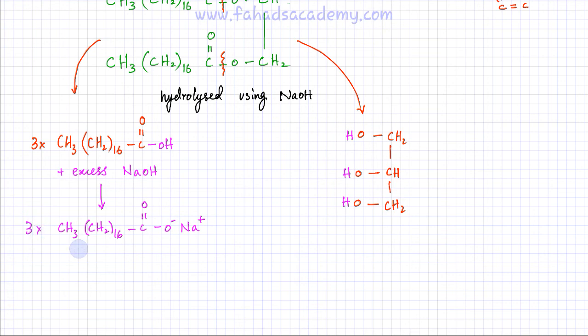And there would be three of these molecules. So this salt formed, these are basically called soaps. So whenever you hydrolyze a fat molecule, you get a carboxylic acid part and you get an alcohol part. But since you're using NaOH, which is an alkali, the carboxylic acid molecule ends up reacting with it and ends up forming a salt, which are called soaps.